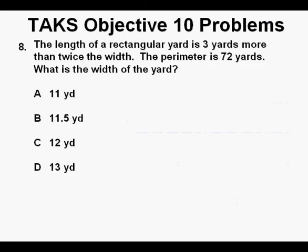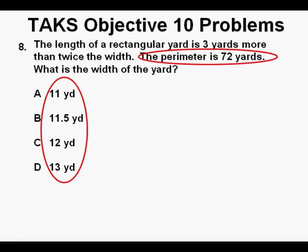Problem 8. The length of a rectangular yard is 3 yards more than twice the width. The perimeter is 72 yards. What is the width of the yard? This problem can be set up and solved as a system of equations, but given that there are multiple choice options, we'll use what I think is a very easy method and that's trying out all these widths of rectangles and seeing which of these widths gives us a rectangle with a perimeter of 72 yards.